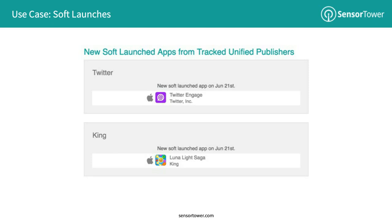We have a really cool alert that notifies you when a publisher has soft-launched a new title. In this case, we can see that Twitter on June 21st soft-launched Twitter Engage. When you click on the app icon, it takes you within Sensor Tower where you'll be able to see which countries that publisher is soft-launching the title. Additionally, we'll notify you when that title has released its worldwide launch. This is a great way to stay on top of competitors, know their roadmap and go-to-market strategy, and adapt your own to beat them to market.